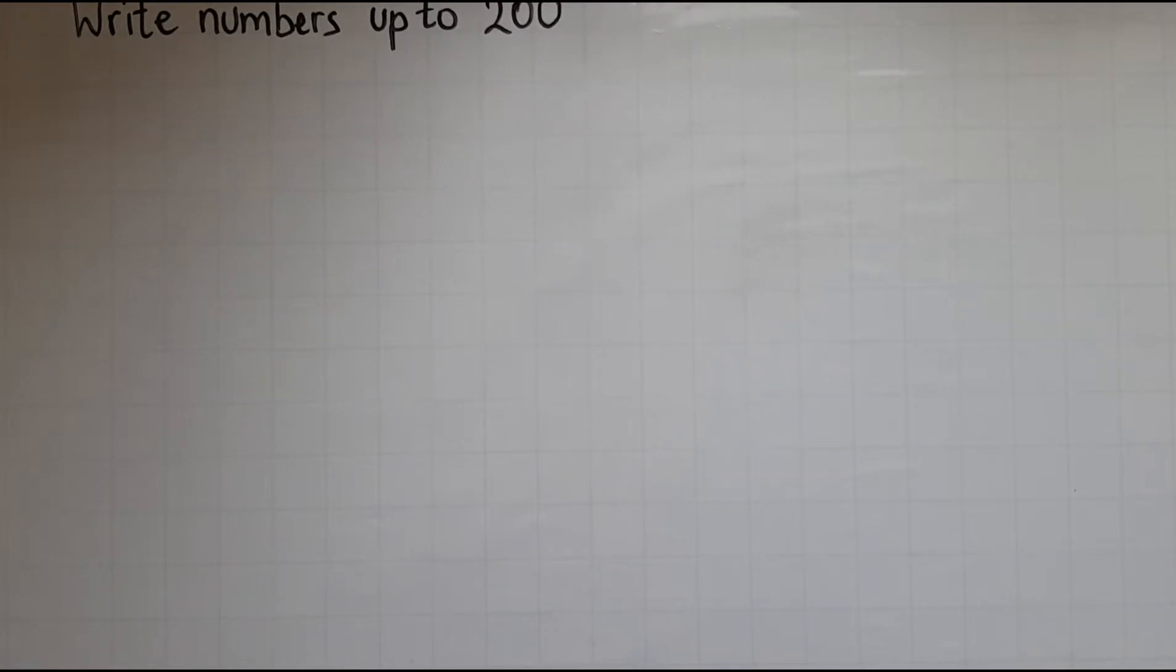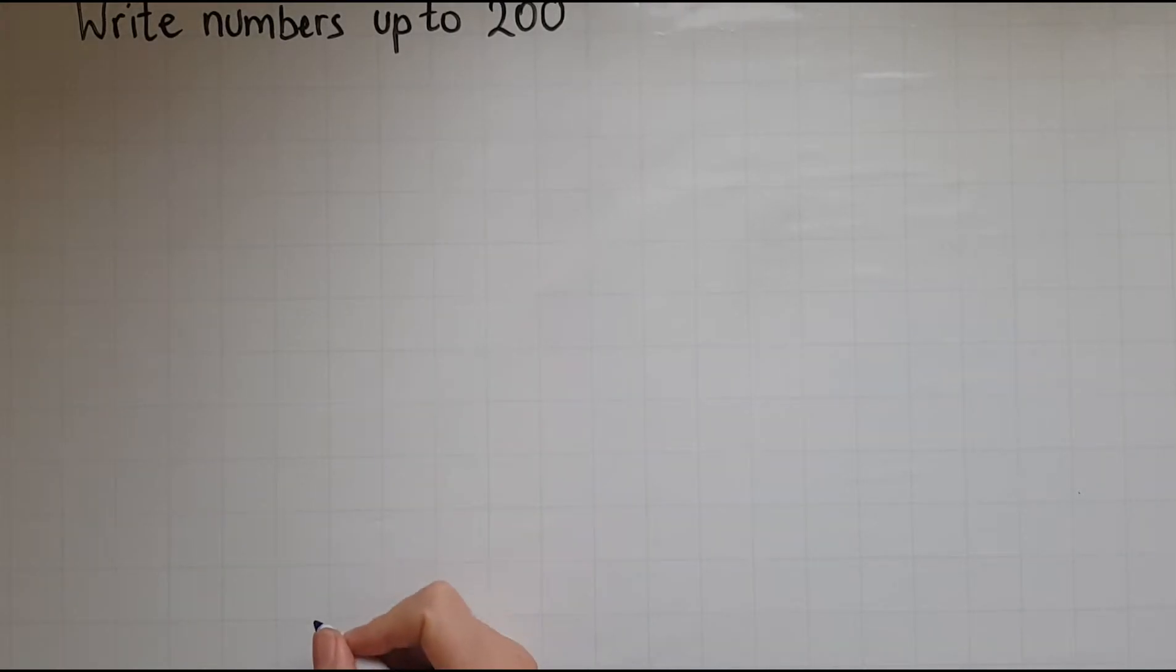In this video we'll learn to write numbers up to 200 in digits and in words. So I will start off with numbers bigger than 20. You should be able to know how to write numbers up to 20. If not, go back to the entry 1 video on writing numbers up to 20. So it is important that you know how to write all the tens.